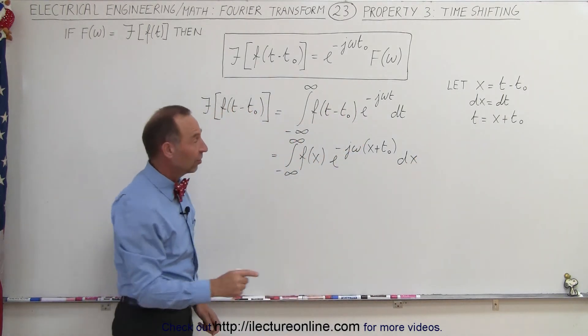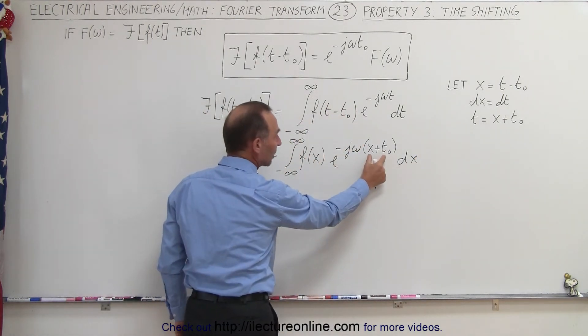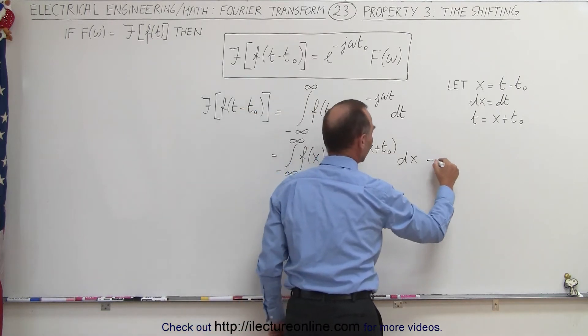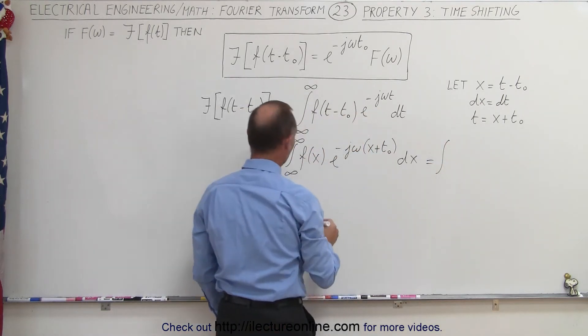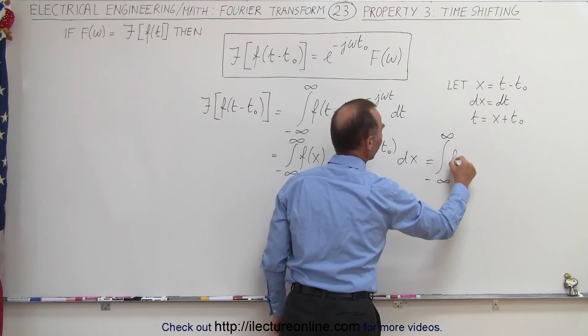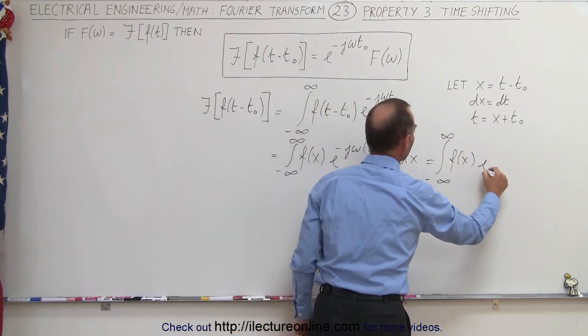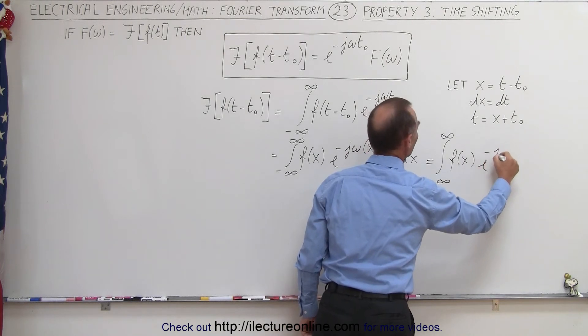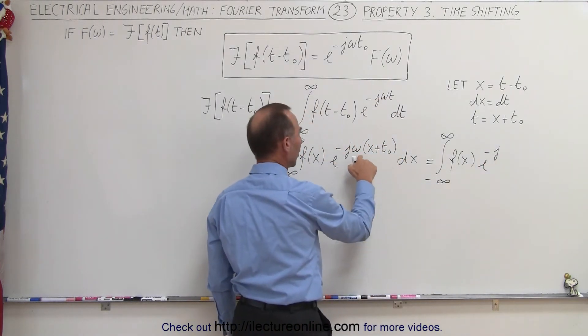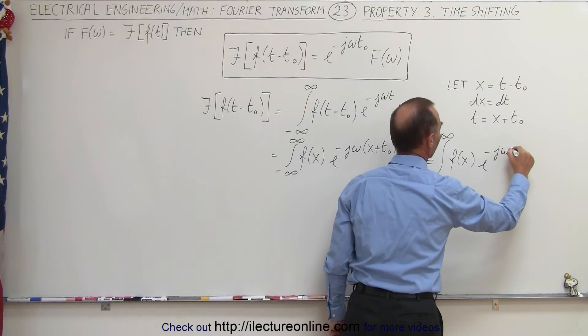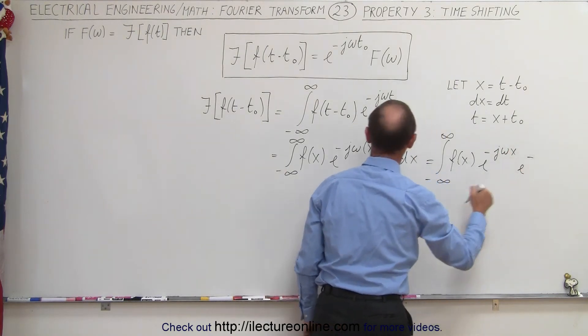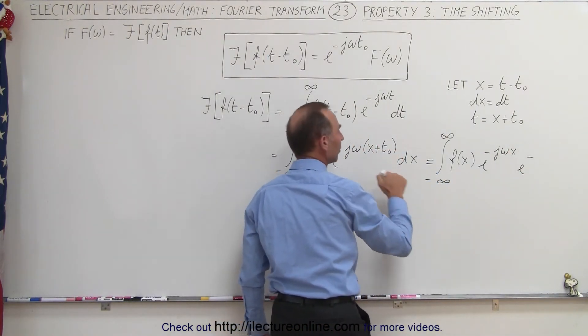Now, since this is an exponential, and we have a sum here, that means the same thing as this, so this can now be written as the integral from minus infinity to infinity of f of x. And now this can be written as the product, e to the minus j omega x, and then e to the minus j omega t sub-naught.